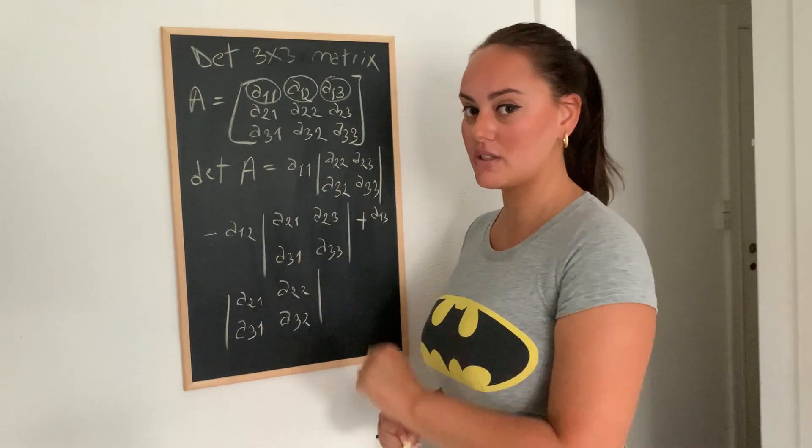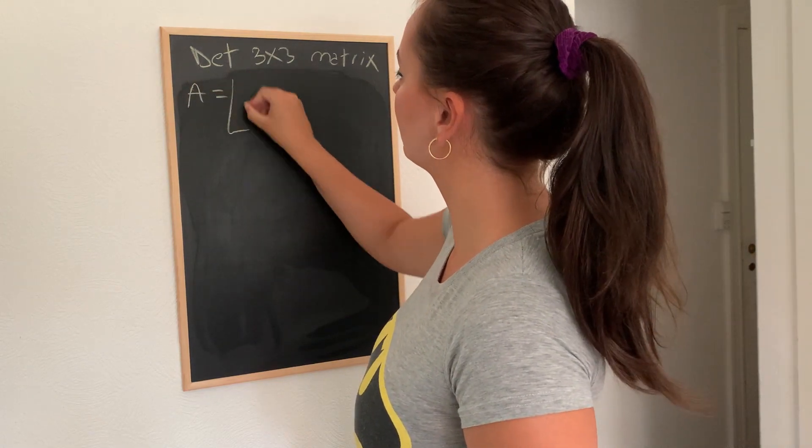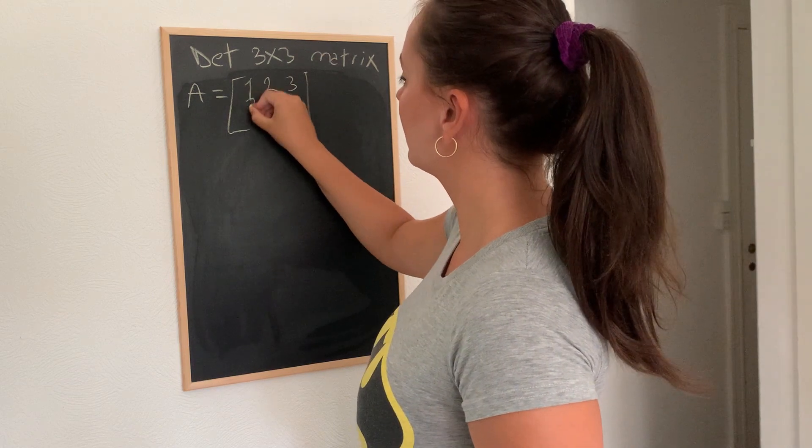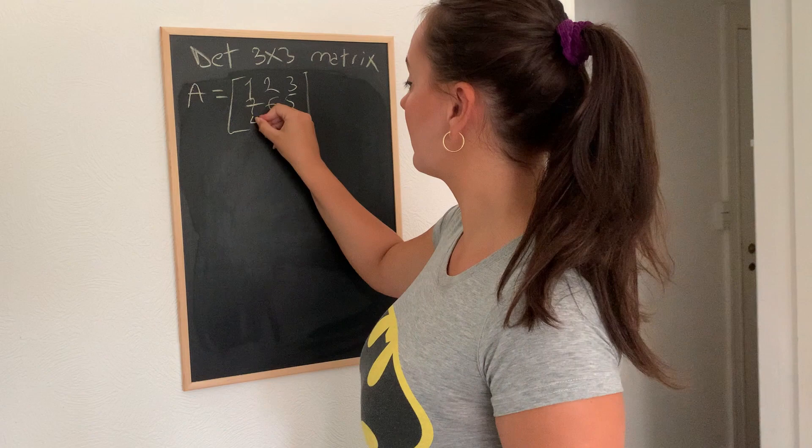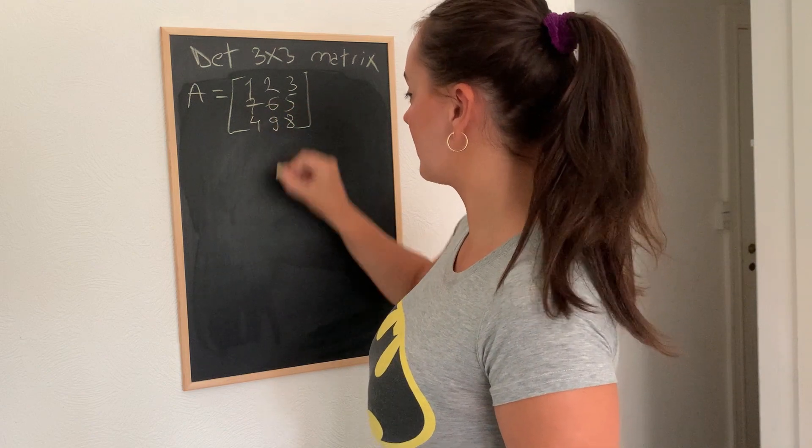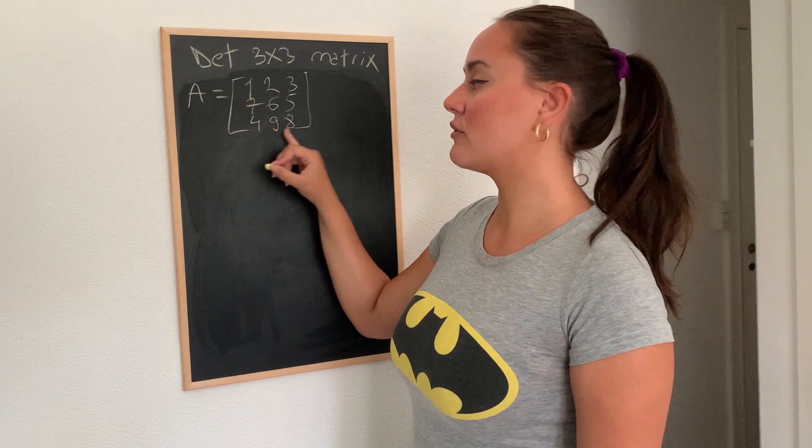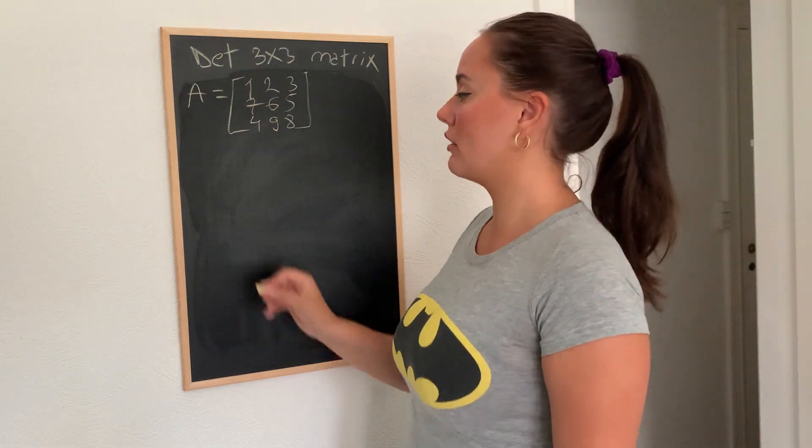So let's take an example and see how this will look like. So we will have matrix A: 1, 2, 3, 7, 6, 5, 4, 9, and 8. So we have the matrix 1, 2, 3, 7, 6, 5, and 4, 9, and 8. And now we try to actually calculate its determinant.